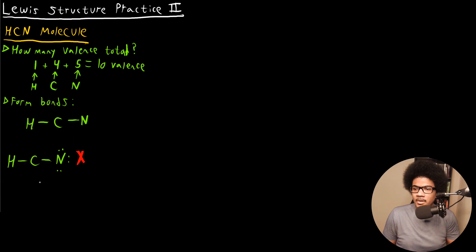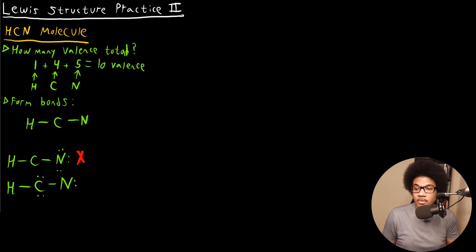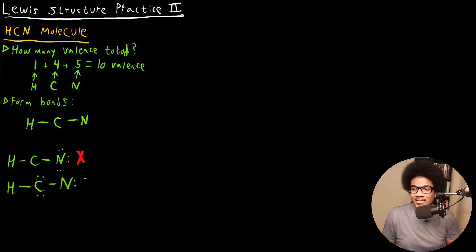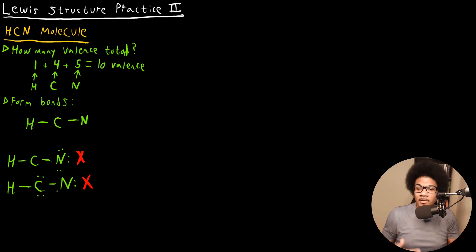Let's try filling up carbon's octet and see what happens. If we fill up carbon's octet, we need two electrons there, and that leaves us with two electrons left. Now carbon has a filled octet, but now nitrogen's octet is not filled. So what are we supposed to do if we can't fill the octets of nitrogen or carbon with lone pairs?